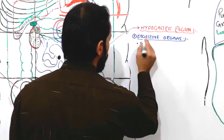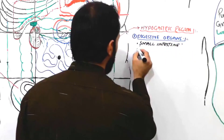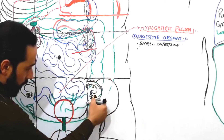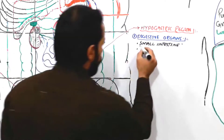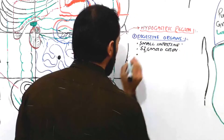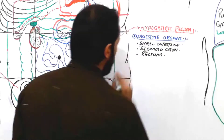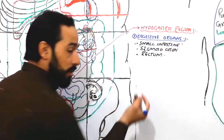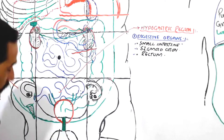The sigmoid colon is also present in the hypogastric region. You can see the transverse colon, descending colon, right colic flexure, sigmoid flexure, and then the sigmoid colon — some parts of it are in the hypogastric region. The last part of the sigmoid colon, called the rectum, is also found there. So the digestive organs in the hypogastric region are the small intestine, sigmoid colon, and rectum.